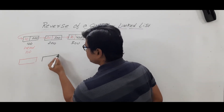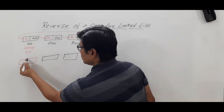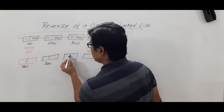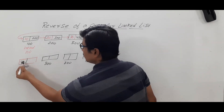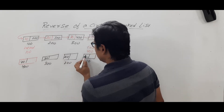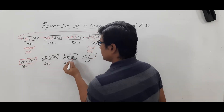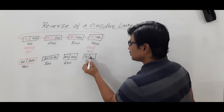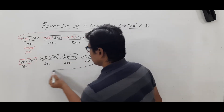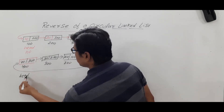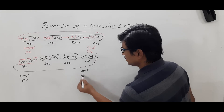Let me draw four nodes. This node's address will be 400, this node's address will be 300, this node's address will be 200, and this node's address will be 100. The values will be 40, 30, 20, and 10 respectively. The address of the next node will be 300, then 200, then 100, and then 400. Head should have the value 400 and tail should have the value 100.